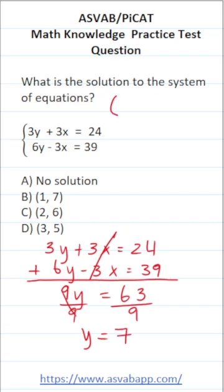Solutions to systems of equations can be written as ordered pairs, and ordered pairs come in the form x, y. We know y equals 7, so 7 is going to go here. Now the question is, how do we solve for x?